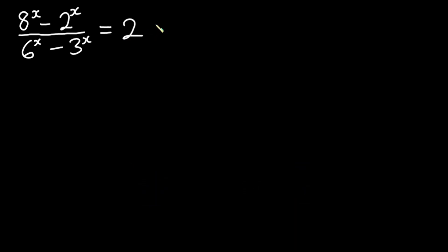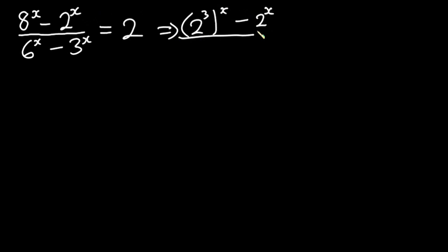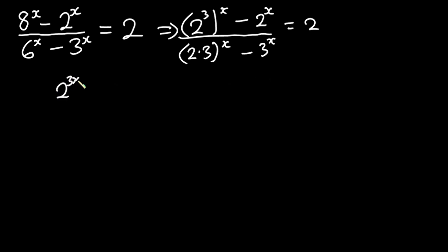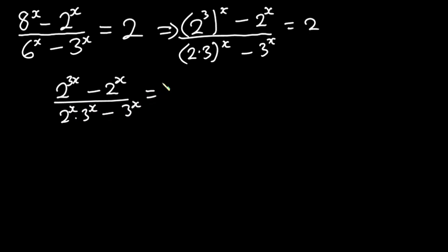Now let's get started. Here I'll write 8 to the power x as 2 to the power 3x, minus 2 to the power x, all divided by 6 to the power x — written as 2 times 3 to the power x — minus 3 to the power x, and this is equal to 2. So simplifying, we have 2 to the power 3x minus 2 to the power x, all divided by 2 to the power x times 3 to the power x minus 3 to the power x, equal to 2.